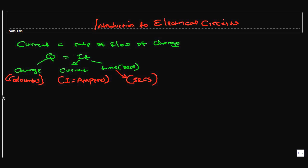We're going to do some basic calculations involving current, time, and charge. Say we have a time of 15 milliseconds and we want to know the current that has actually flowed within this time, if a charge of 0.24 coulombs has passed.